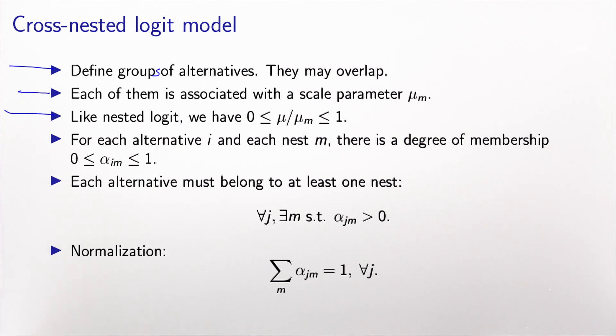And now we introduce an additional parameter, which basically captures the degree of membership of an alternative to a nest. We denote it by alpha_im. So this is the degree at which alternative i belongs to nest m. We assume that each alternative belongs to at least one nest. So for each alternative, there is at least one nest such that this parameter is non-zero. And for the sake of interpretation, and also for the sake of estimation of the parameters, we normalize the membership parameters to 1 over all nests.